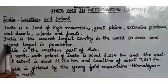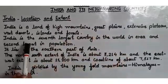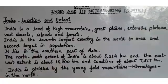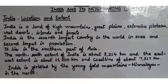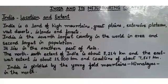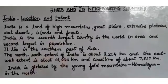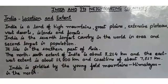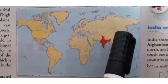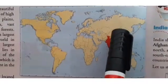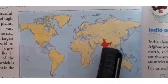India comes seventh largest in terms of area and second largest in terms of population in the world. It lies in the southern part of the continent Asia. Asia is the largest continent in the world, and our country India lies in its southern part. As I can show you on the map, this is the continent Asia, and shown in red is our country India in the southern part.